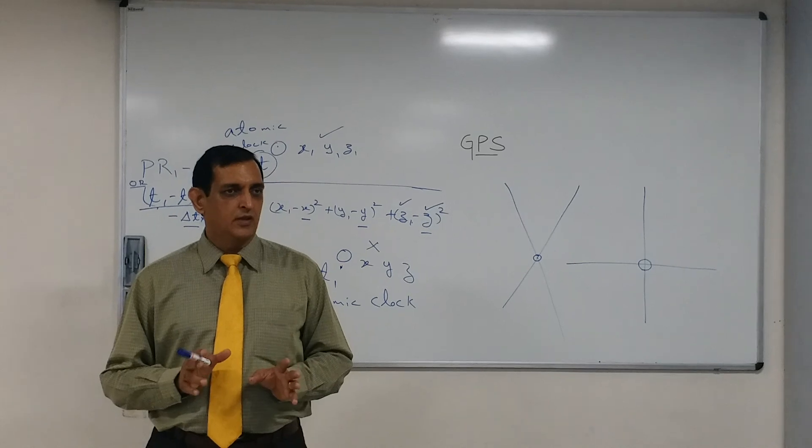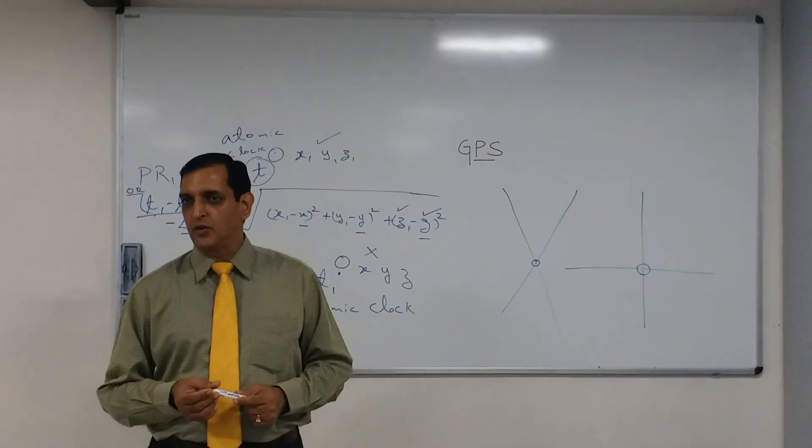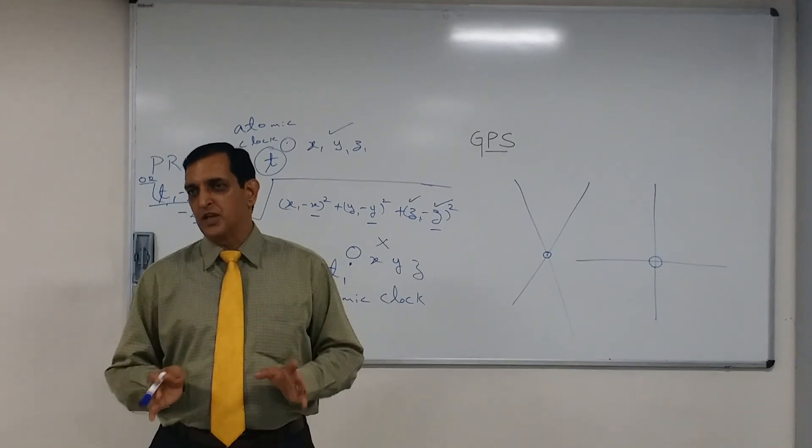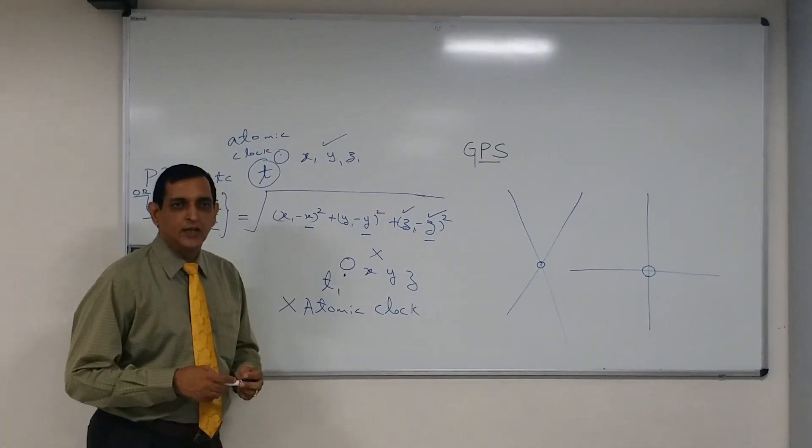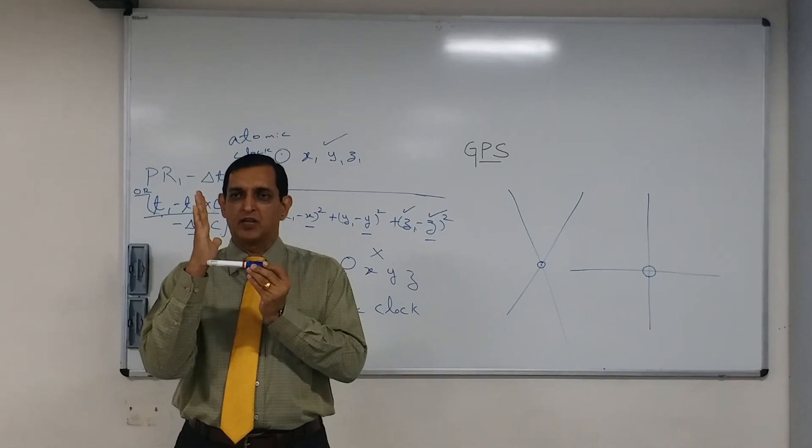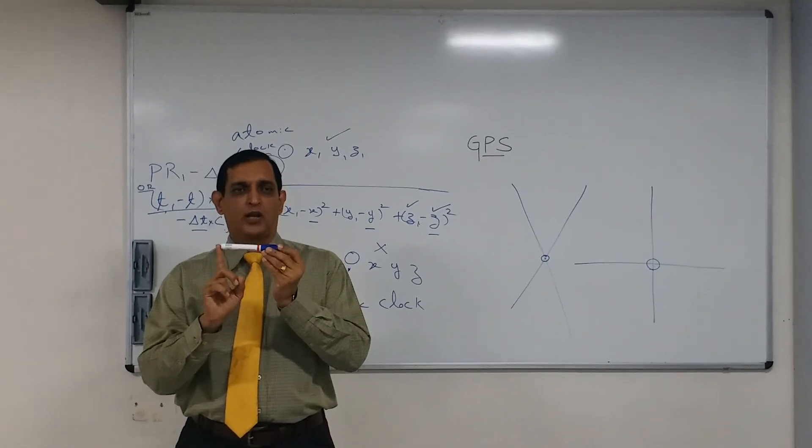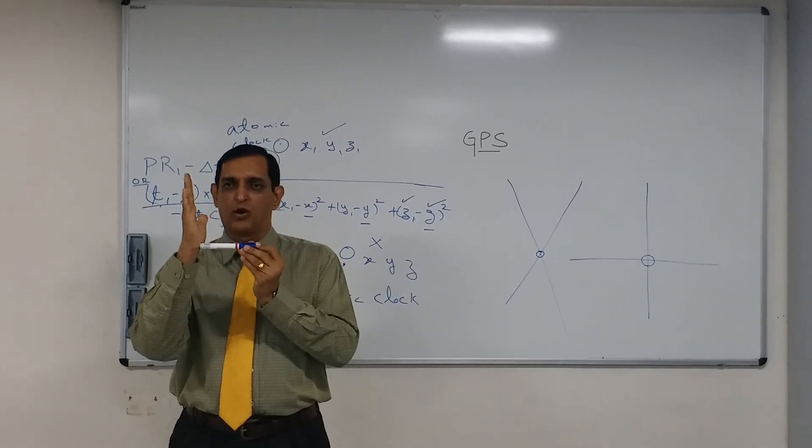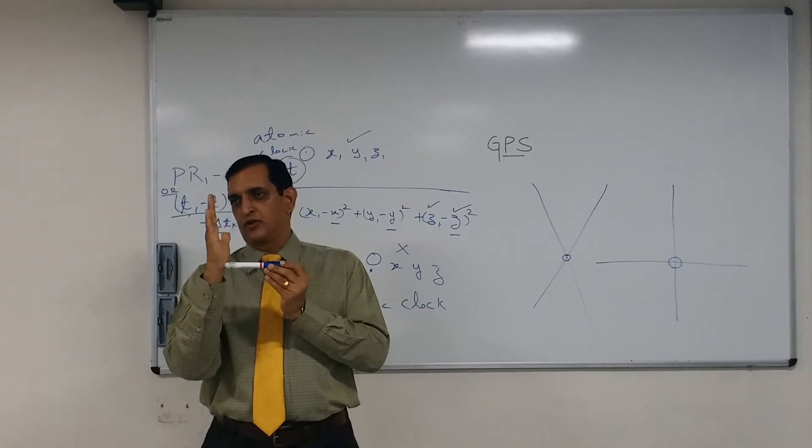Now, sometimes the words come up like vertical dilution of precision and horizontal dilution of precision. Basically GDOP is the error or total error. If I take the total error and I split it in the horizontal direction and in the vertical direction, then the error component in horizontal direction will be called as HDOP or horizontal dilution of precision. Component in the vertical direction will be called as VDOP or vertical dilution of precision.